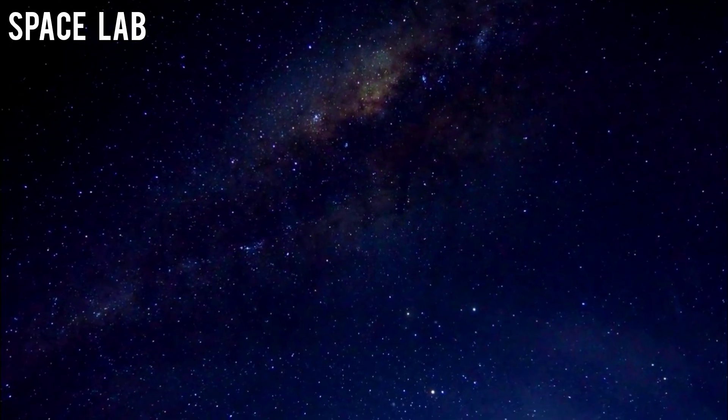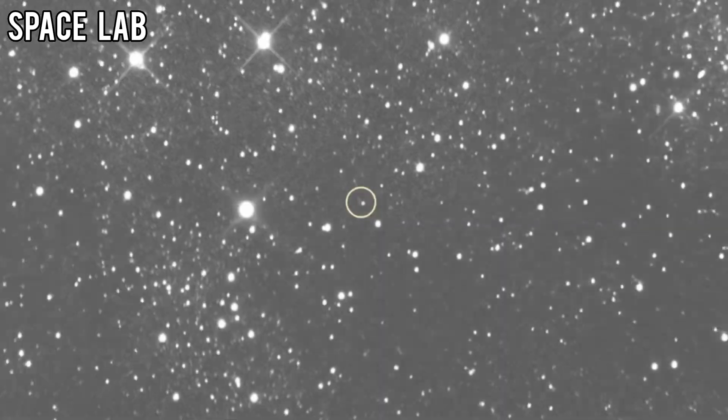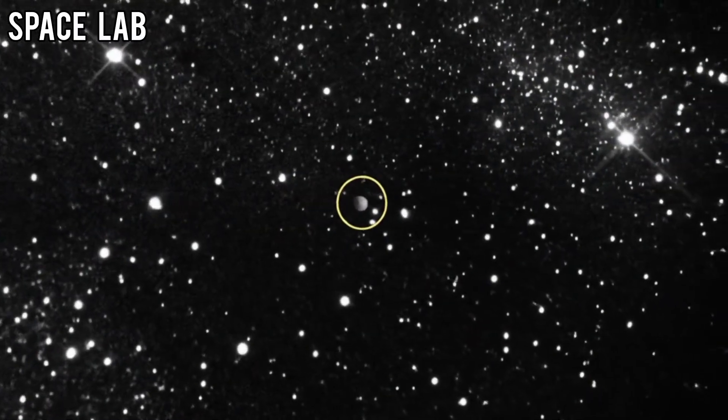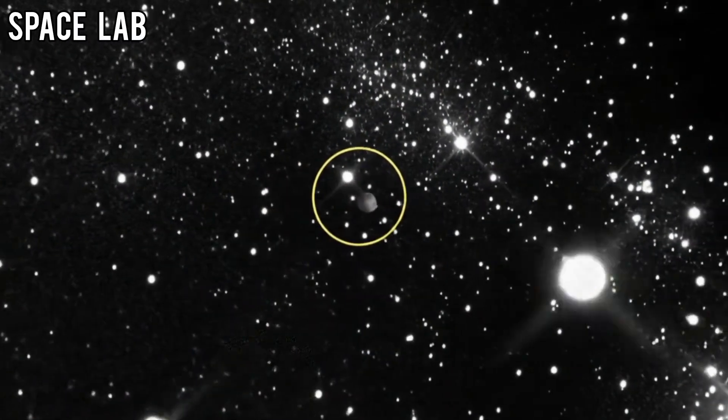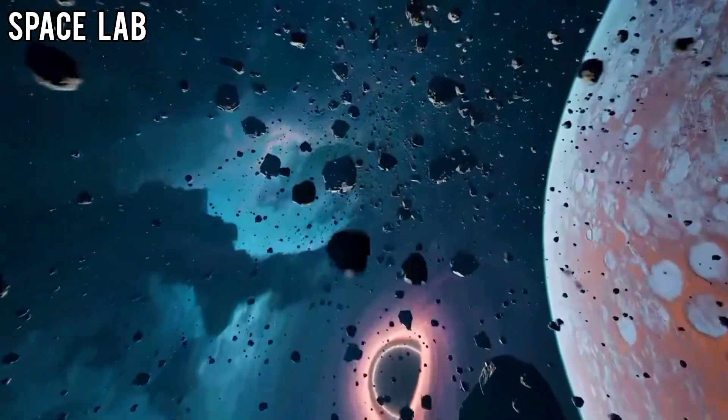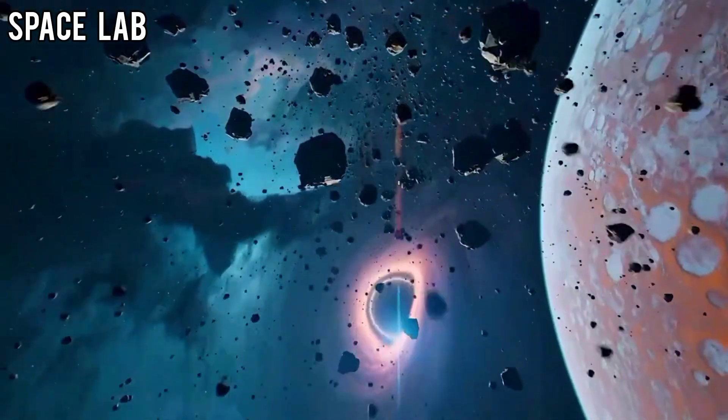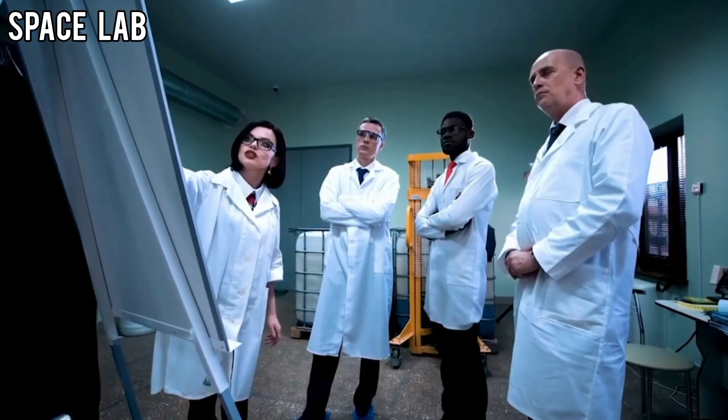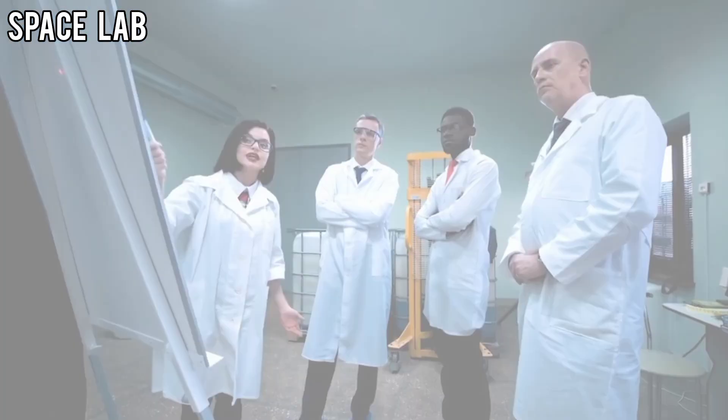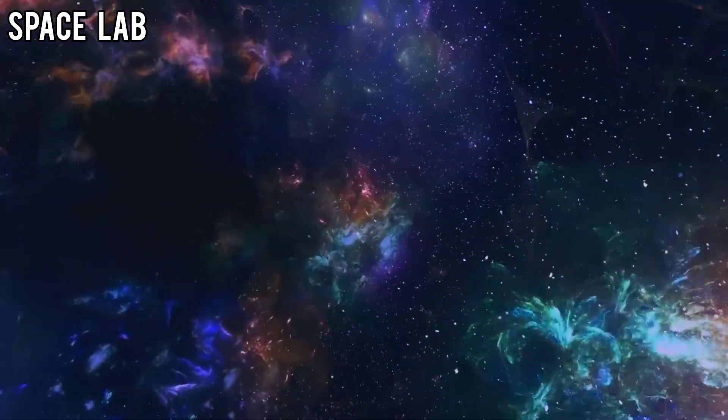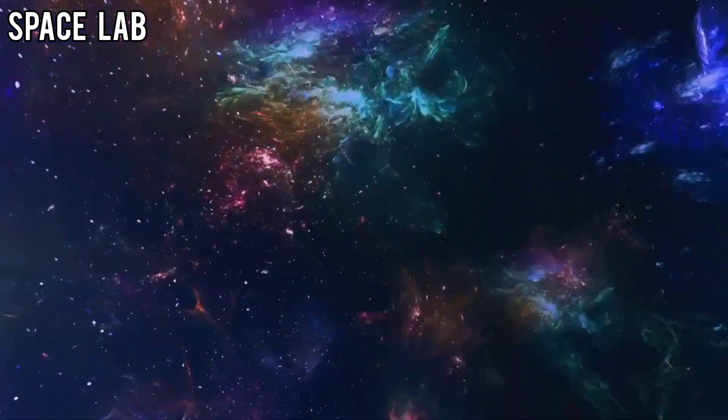And that's when the whispers began. What if 31-Atlas isn't an asteroid at all? What if it's artificial? But this was only the beginning. Because once the data was decoded, scientists realized the so-called lights weren't just random emissions. They were messages.